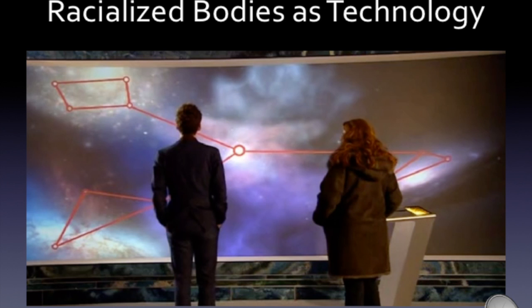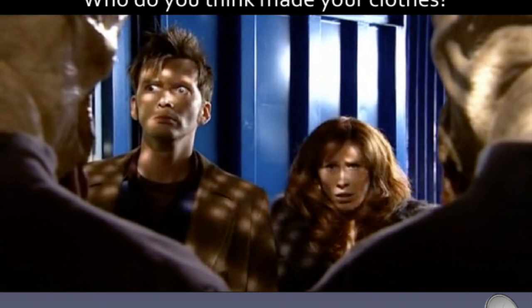In one scene, the Doctor shows Donna a map of the second great and bountiful human empire, which is punctuated by Ood distribution centers across all three galaxies. The scene ties Ood enslavement to the greater capitalist and imperialist networks of which they are a part. Through the use of race as technology, the clones and the Ood become objects — mere cogs in the very machine that oppresses them. But the use of racialized bodies is not limited to far-off worlds.